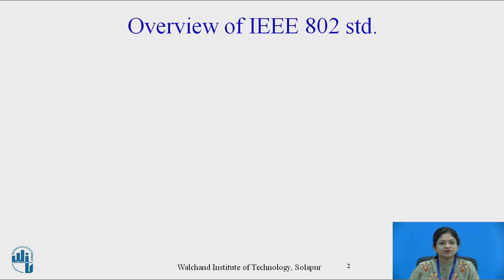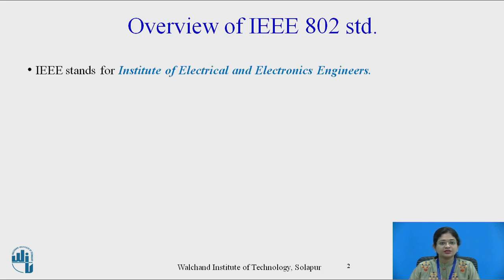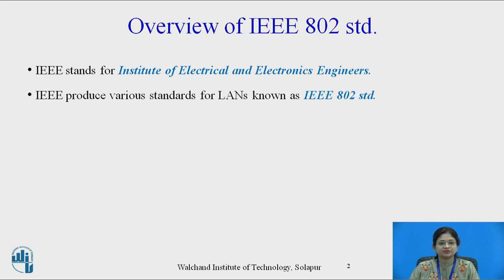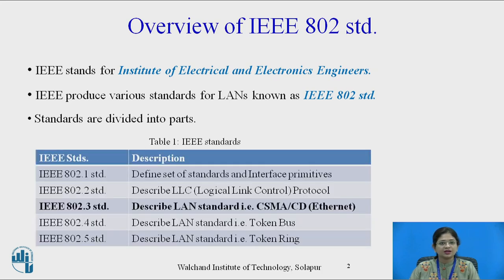Now let's see the overview of IEEE 802 standard. IEEE stands for Institute of Electrical and Electronics Engineers. IEEE has produced several standards for LAN which are known as IEEE 802 standards. These standards are divided into various parts. IEEE 802.1 defines the set of standards and interface primitives. IEEE 802.2 describes the LLC — Logical Link Control protocol — which is the lower layer protocol of the data link layer of the TCP/IP protocol suite.